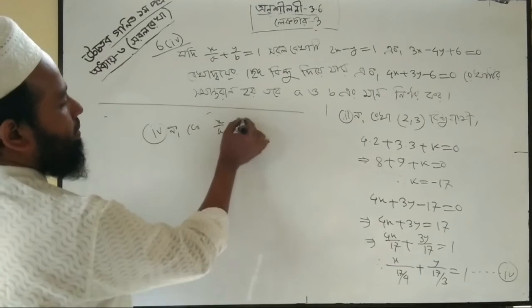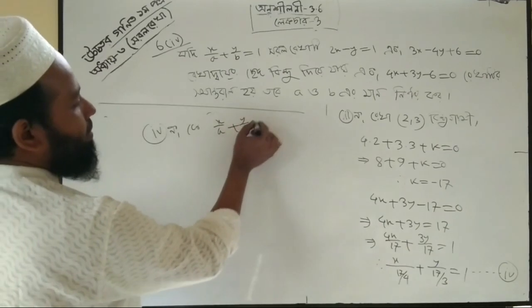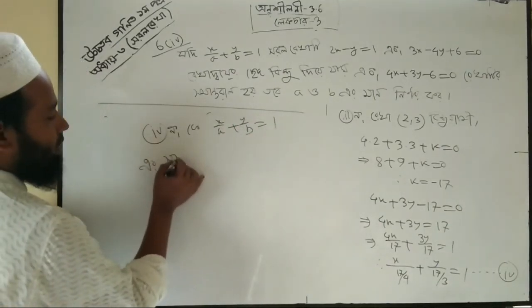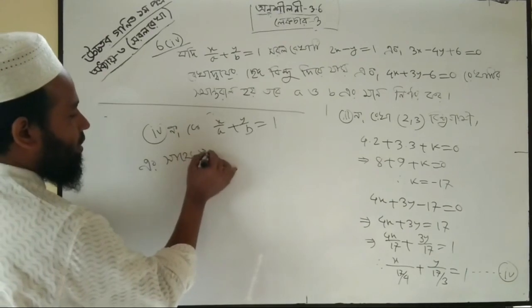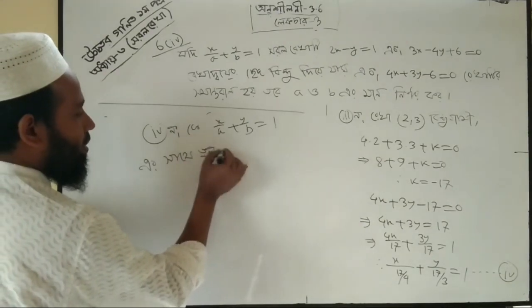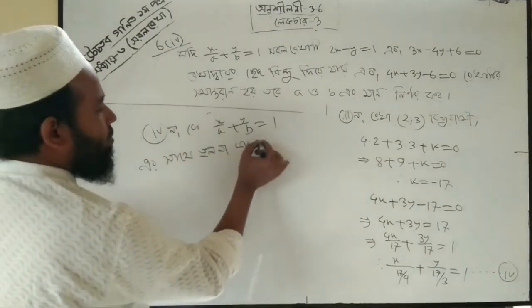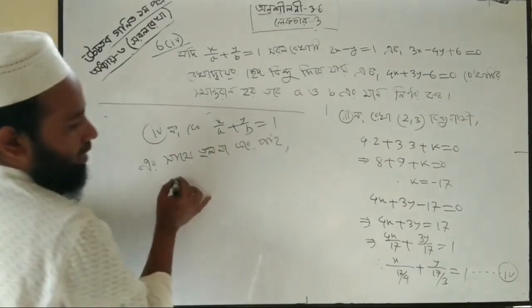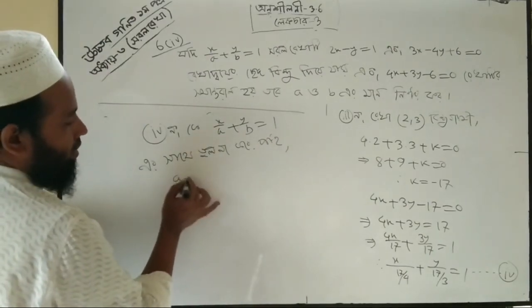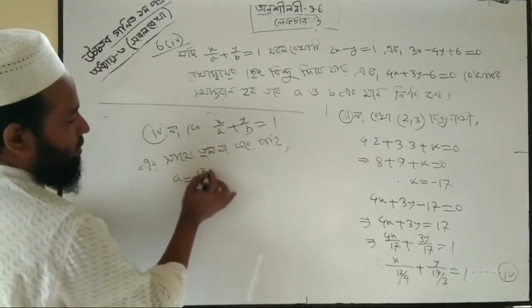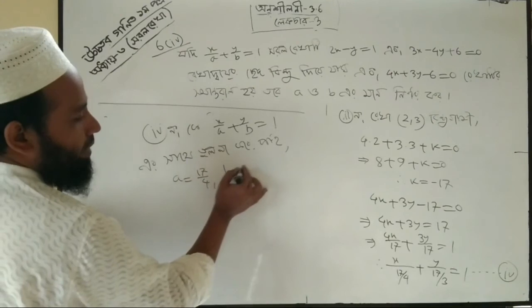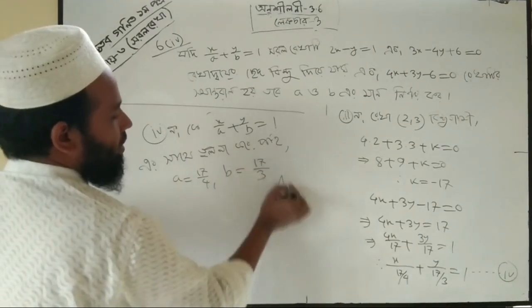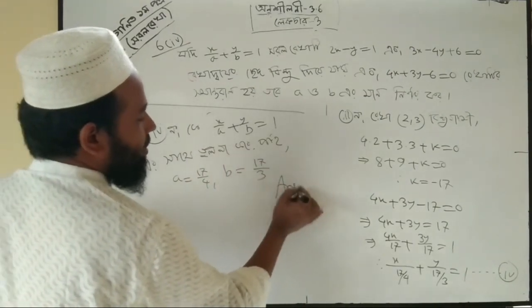Using intercept form x by a plus y by b equals 1, we get a equals 17 by 4 and b equals 17 by 3. That's the answer.